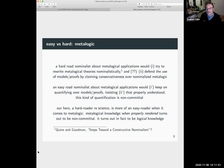Hard road nominalists about metalogical applications would try to rewrite metalogical theories nominalistically, maybe that's in the spirit of Quine and Goodman's steps towards a constructive nominalism, maybe you'd look at proof tokens instead of proofs conceived as abstract objects, and defend the use of models, proofs, by claiming conservativeness over some kind of nominalized meta logic.